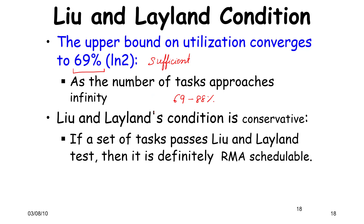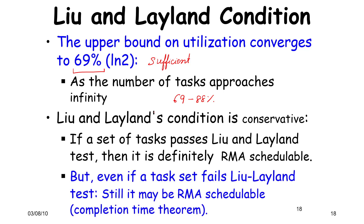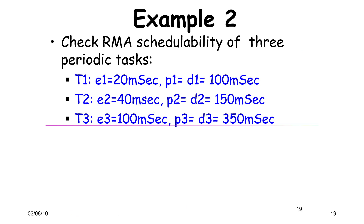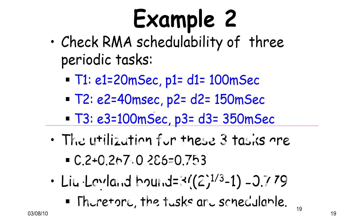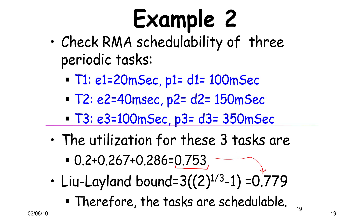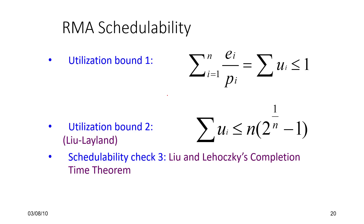There is a need for better bounds, which is how people arrived at Lehocsky's condition. For three tasks, the utilization of 0.753 is RMA schedulable. But if I slightly modify these tasks and increase the utilization, it will not pass the Liu and Layland condition yet may still be RMA schedulable with high likelihood. The Liu and Layland bound essentially comes from the argument that at any point on a uniprocessor, only one task can execute.